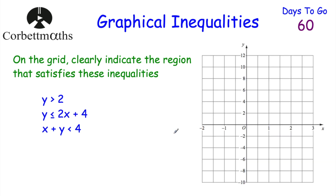Let's have a look at our next question. On the grid, clearly indicate the region that satisfies these inequalities: y is greater than 2, y is less than or equal to 2x + 4, and x + y is less than 4. Feel free to press pause and think about how you would indicate the region that satisfies these inequalities.